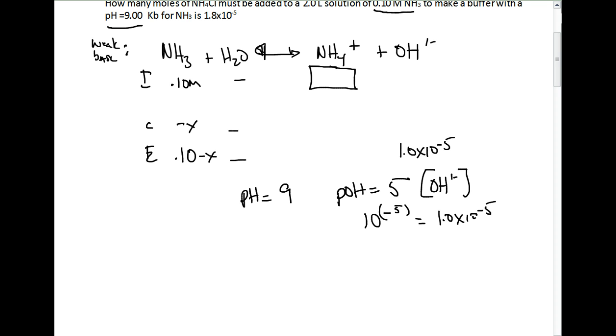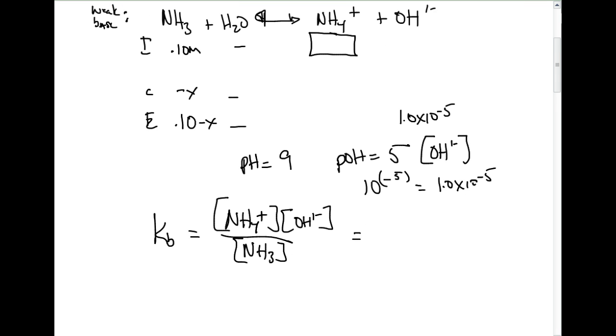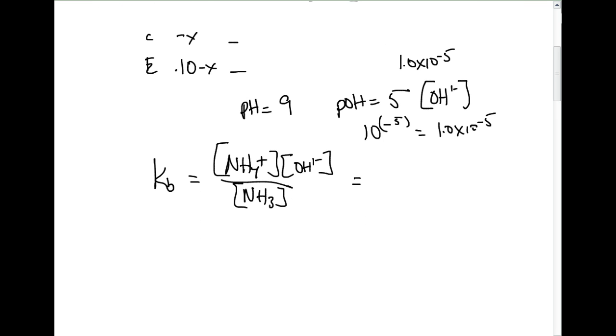What we're trying to find out is how many moles of ammonium we need initially. We're going to use the Kb expression, which would be NH4+ times OH- over NH3. We're going to plug in all the values we have and solve for our unknown value. Our Kb value was given as 1.8 times 10 to the negative 5th originally in the problem.